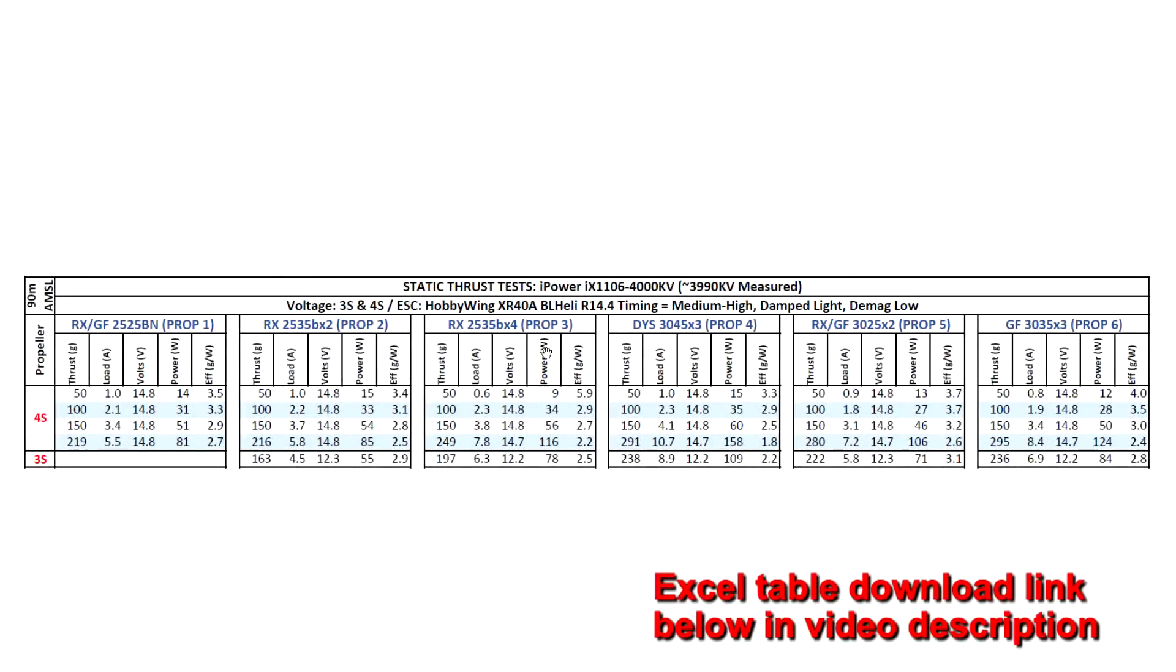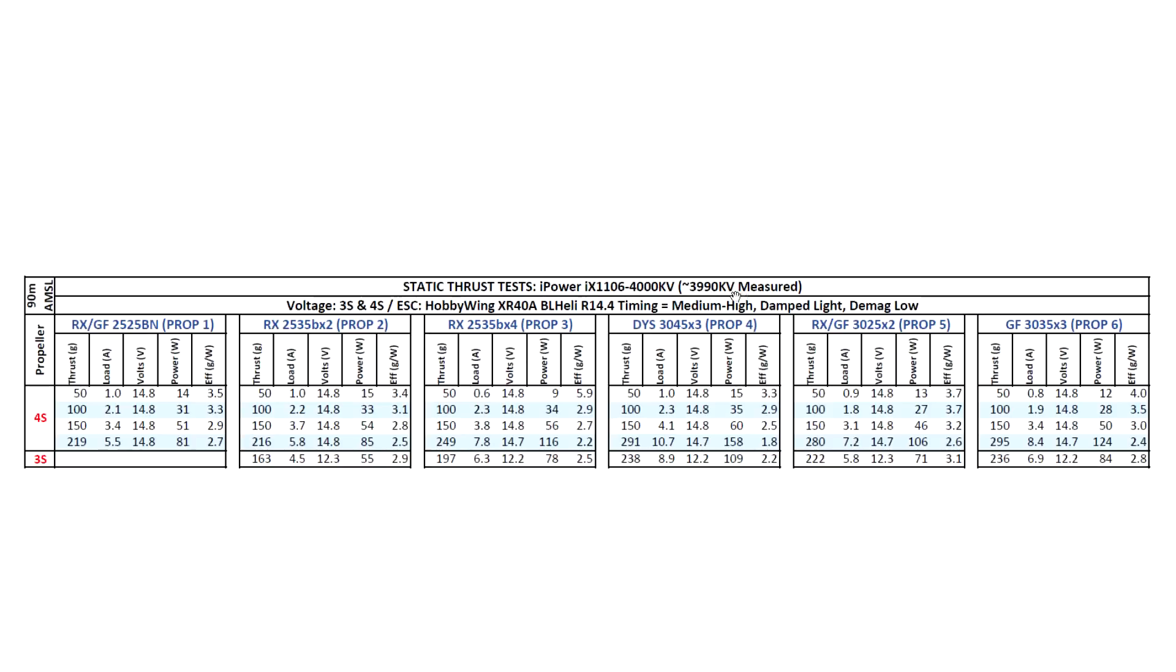All right, so let's look at the thrust test results for the iPower iX1106, 4000 kV. As you saw, the motor measured at 3,990 kV, pretty close to the spec value of 4,000, so that's pretty good.